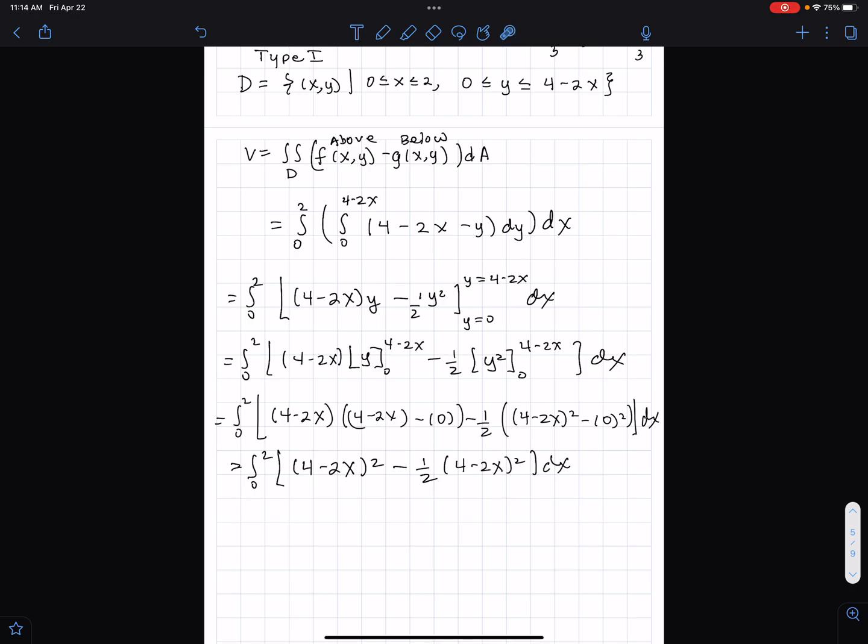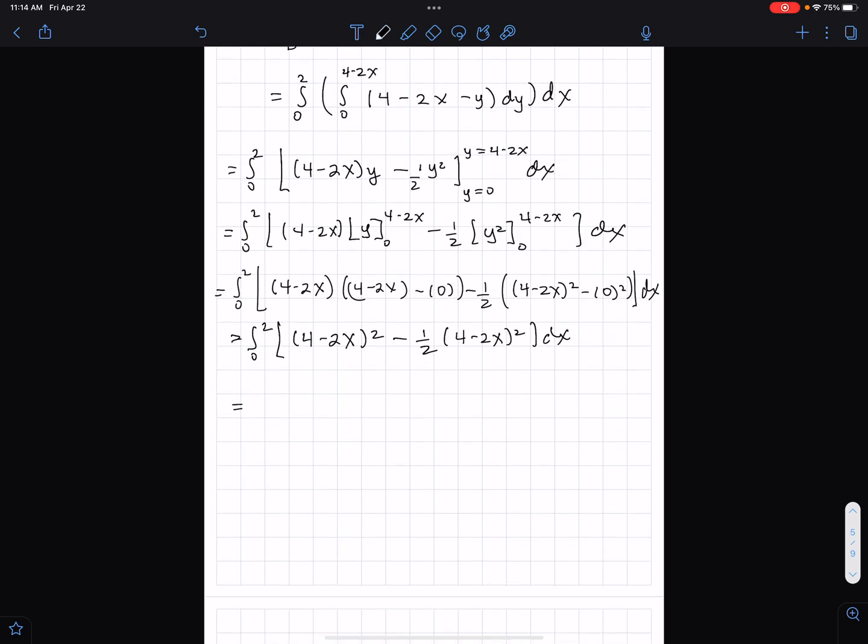What we end up is 4 minus 2x, like one of those, subtracting half of the 4 minus 2x. So 1 minus 1 half makes 1 half. So we get 0 to 2, 1 half, 4 minus 2x squared dx. I think I could just evaluate this in my head, sort of figure it out. But I'm going to go the whole way and do u sub, where u is 4 minus 2x. du is negative 2 dx. So negative 1 half du is equal to dx.